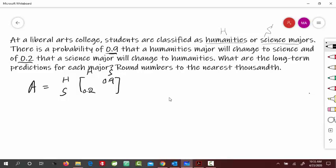So the remaining positions we can fill. So here would be 0.1 because the sum of the row must be 1, and here would be 0.8. So this is your transition matrix A.